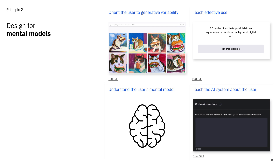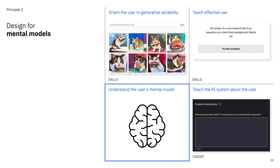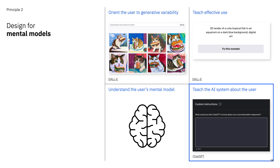Our second principle is to design for mental models. Mental models represent a user's understanding of how a system works and how to use it. The strategies here focus on ways to help users understand concepts like generative variability and learn how to use the system effectively. DALL-E does this by providing tutorials and examples of what you can do with it, and also by explicitly showing multiple outputs for your prompt. It's also important for designers to understand and measure users' mental models to find discrepancies — what Upol Aishoon refers to as seams in AI systems. ChatGPT recently launched Custom Instructions, which adapts its responses to the user like a user profile.